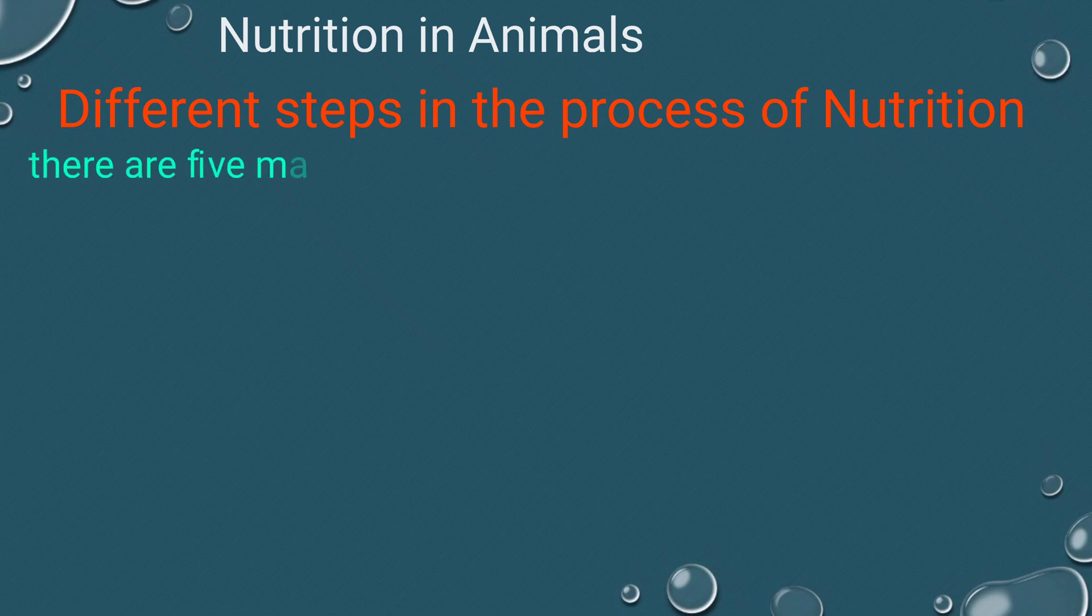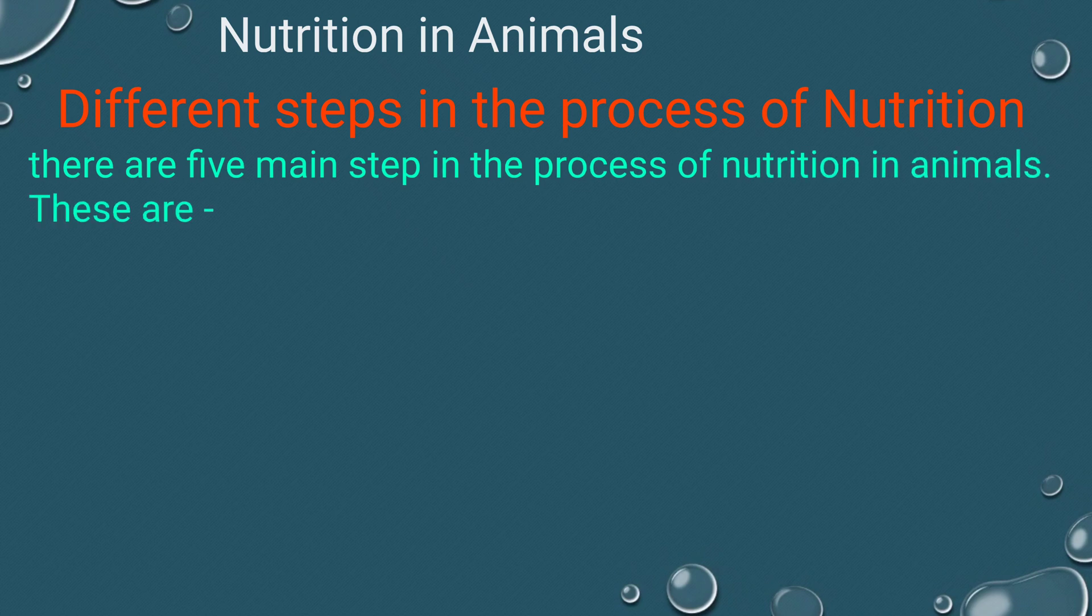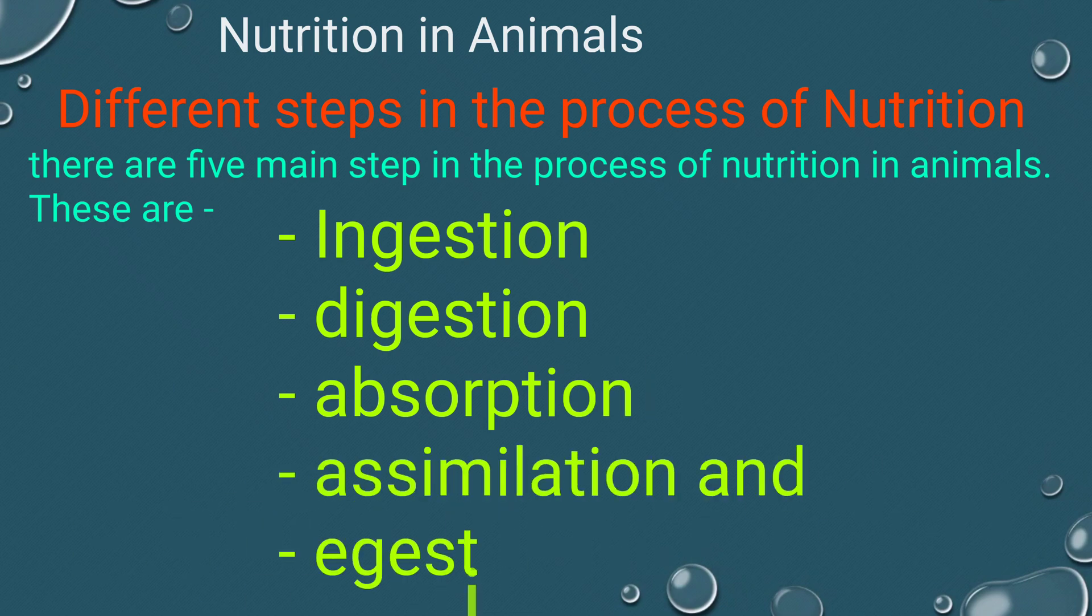There are five main steps in the process of nutrition in animals. These are ingestion, digestion, absorption, assimilation, and egestion.